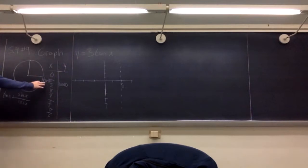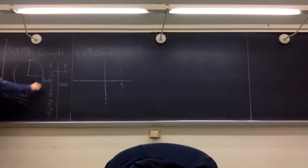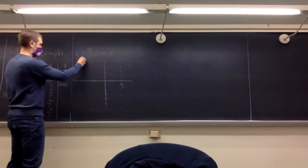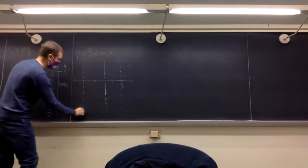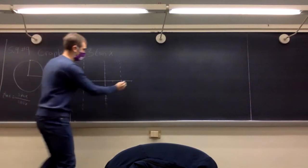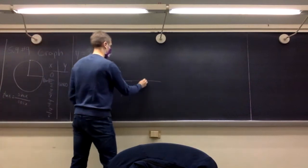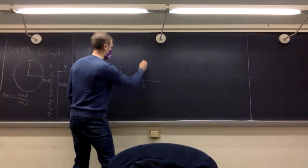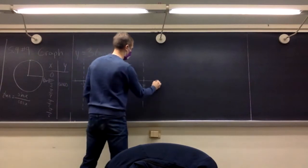So we have one pi over two, three pi over two, five pi over two, et cetera — every single odd coefficient. Over here, we're going to have all of these vertical dotted lines at every single odd multiple of pi over two.